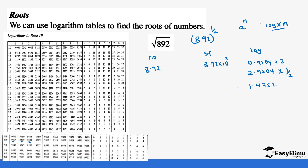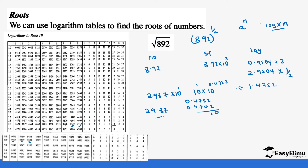So if we look for the standard form of this anti-log, this is the same as 10 power 1 times 10 power 0.4752. So you look for 4752. Inside the table we have 4742 and 4757, so you pick 4742 because it's the closest. That gives us 2.9 across and 8 upwards. The difference between 4752 and 4742 is 10, and moving across the difference column gives us 7. So it's 2.987, then times 10 power 1, which gives us 29.87 as our answer.